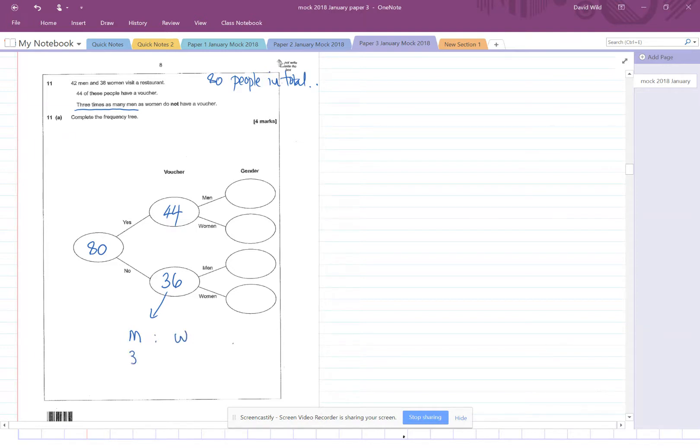So we've got men and women. And there are three men who don't have a voucher compared to one woman. And remember when we do ratios, we do a total column. The total here is three plus one is four. And we know that we've got a total of 36 of these people.